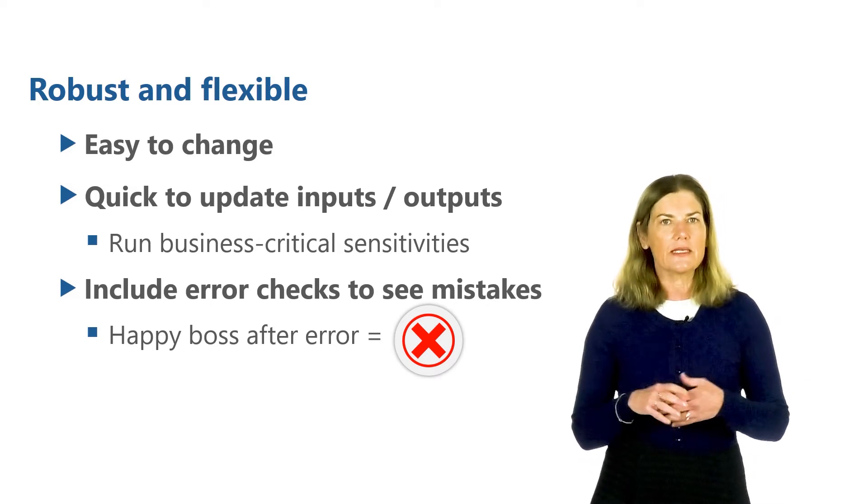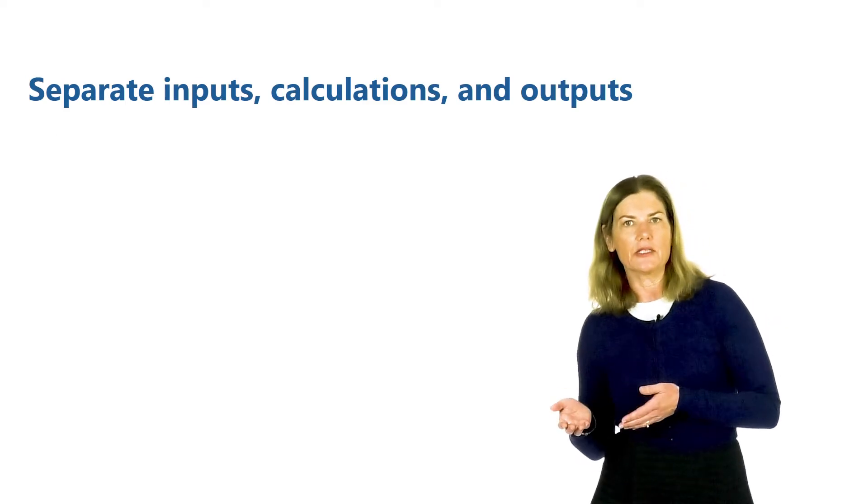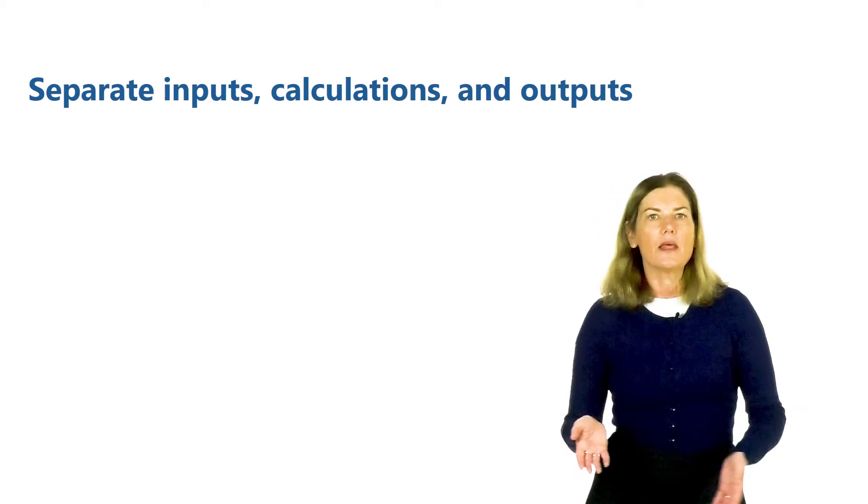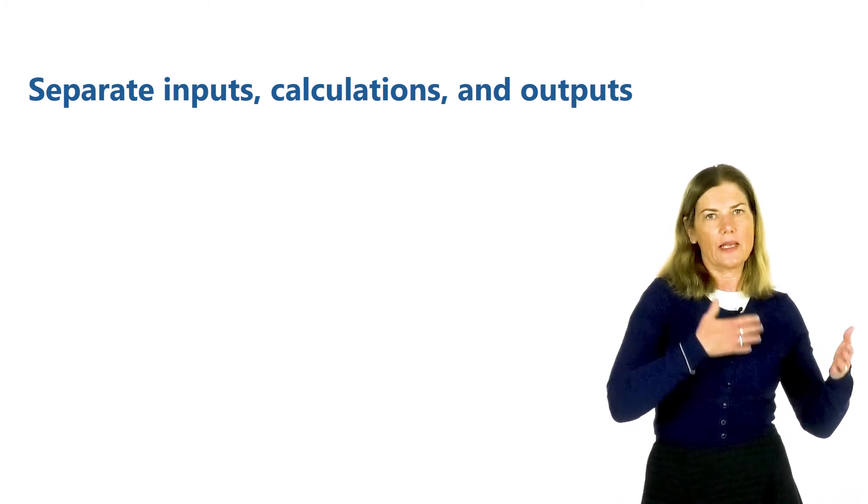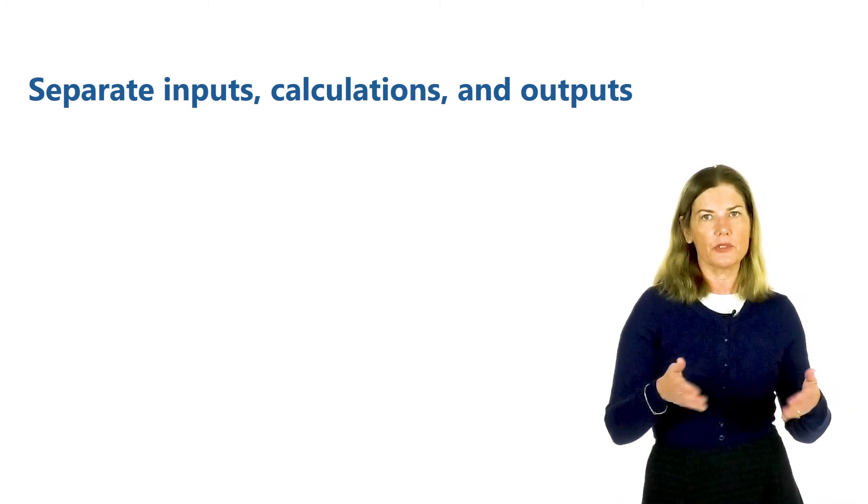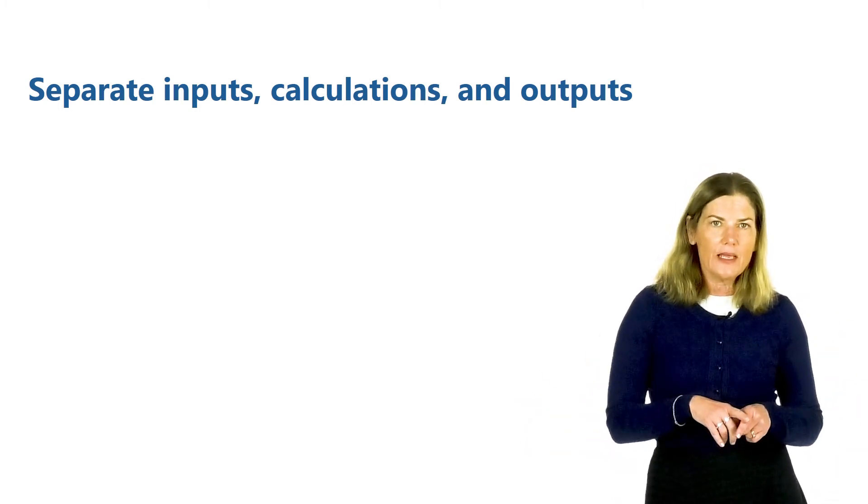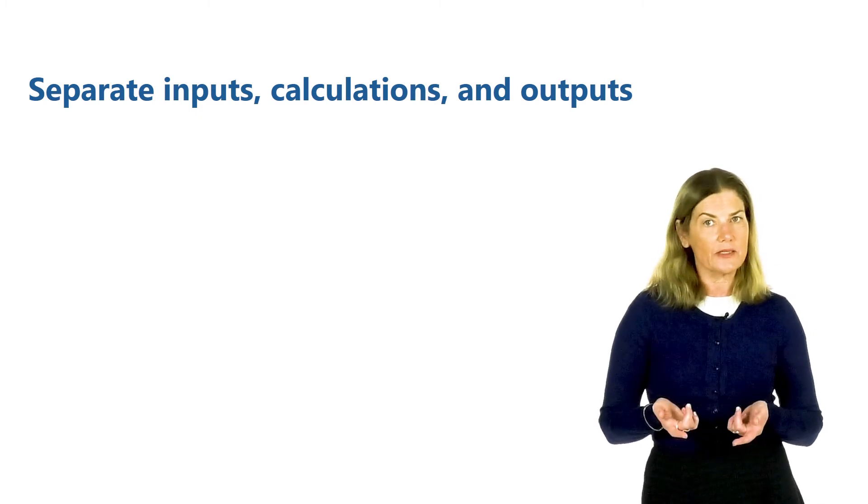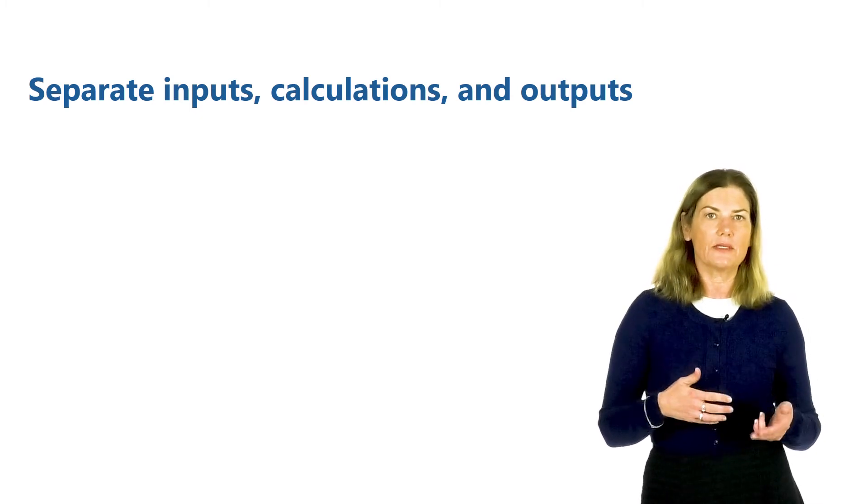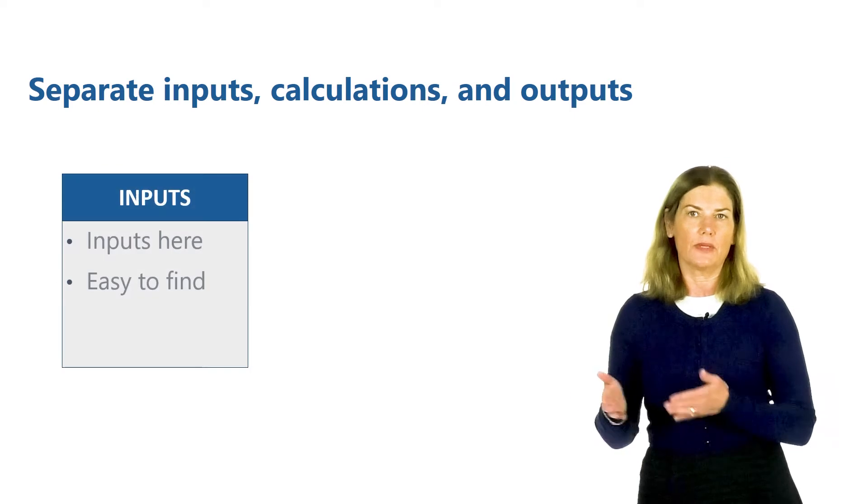One of the rules is to separate inputs, calculations and outputs. The inputs are manually entered into a model and they're separated from the calculations and the outputs by using different tabs. This ensures that the inputs are only entered once and all the assumptions and data is entered in one place within the model.